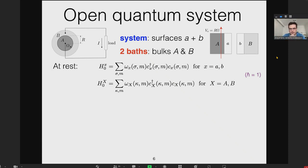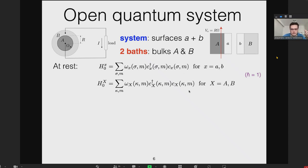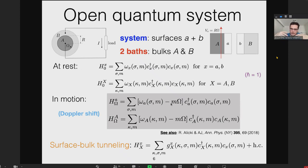Going back to this minimal triboelectric generator, there's surface a attached to bulk material A and surface b attached to bulk material B. The electrons on the surfaces will be the system coupled to external baths of electrons in the bulks. This is an exercise in quantum field theory. I consider the modes in second quantization. These would be the Hamiltonians for the modes—x would be either surface a or b, and capital X is bulk A or B.